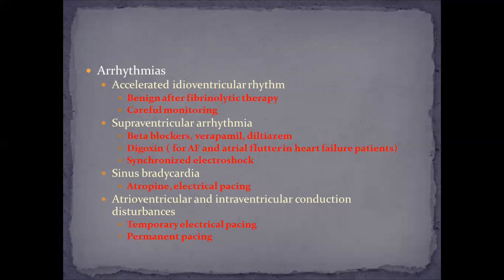If the patient develops supraventricular arrhythmia, give beta blockers and calcium channel blockers like verapamil and diltiazem. For atrial fibrillation and atrial flutter with heart failure, the drug of choice is digoxin, and synchronized electrical cardioversion can also be used. For sinus bradycardia, atropine is given; if the patient doesn't improve, electrical pacing can be used. For atrioventricular and intraventricular conduction disturbances, temporary electrical pacing is indicated.